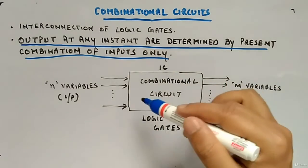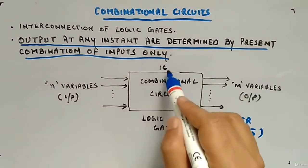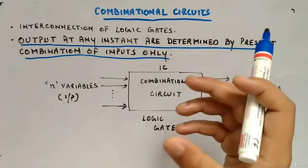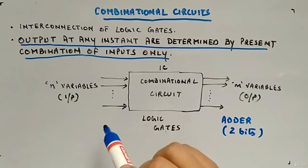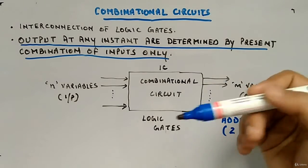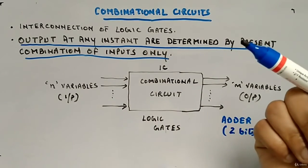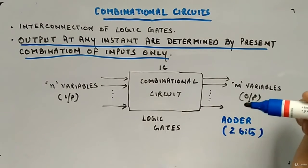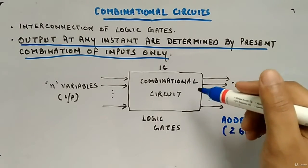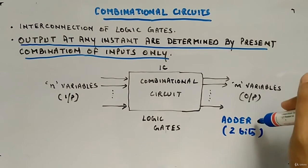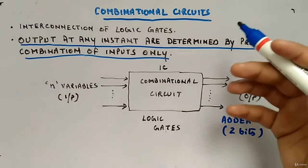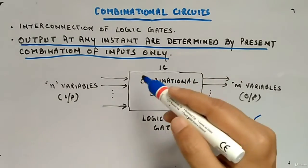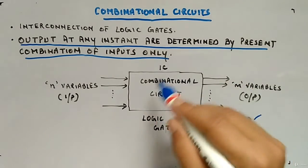So, once you will design that circuit, what will happen? Then you can keep it in an IC. Inside an IC, you have let's say your two bit adder. Whenever you require adding two bits, you will just give the two inputs and directly you will get the output. You don't have to design again and again. Once you have designed an adder, you can use it again and again. Or you can use that adder in other circuits as well. So, that is the benefit of combinational circuits.